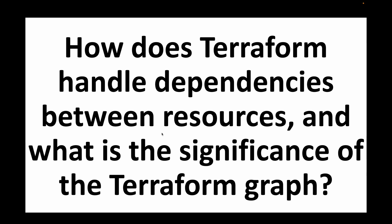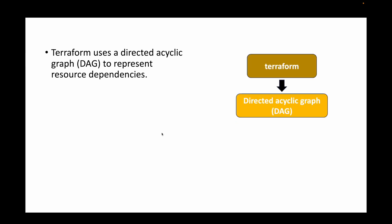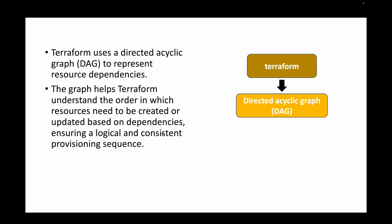The next question is: how does Terraform handle dependencies between resources, and what is the significance of the Terraform graph? Terraform uses a directed acyclic graph (DAG) to represent resource dependencies. When we run terraform plan, it shows the graph of the order in which resources are going to be created or modified. This graph helps Terraform understand the order in which resources need to be created and their dependencies, ensuring a logical and consistent provisioning sequence. Terraform is intelligent enough to figure this out automatically.